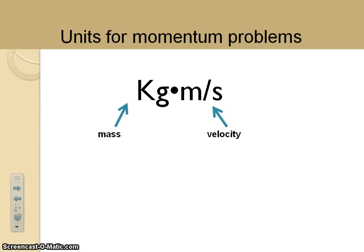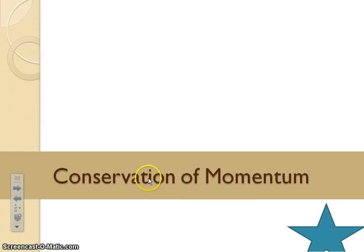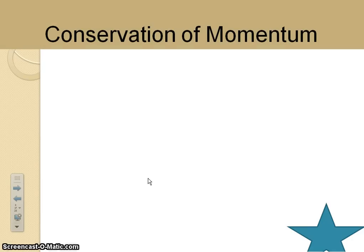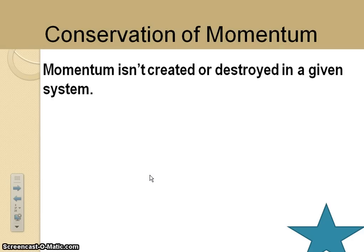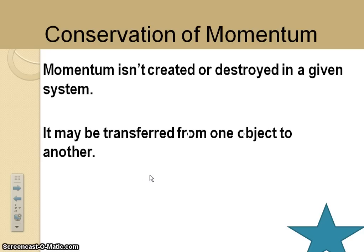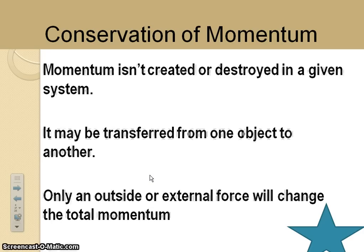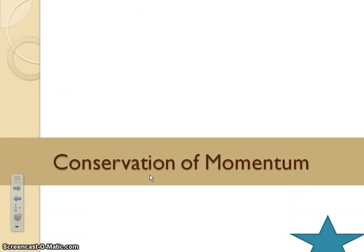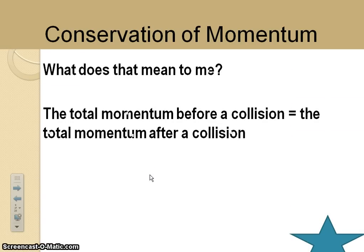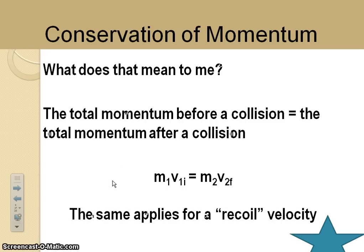Here we have the units for momentum problems. In every case, we'll have kilograms times meters per second. Conservation of momentum, let's go ahead and get down to the next section. Here you have the definition, means momentum isn't created or destroyed in any given system. In other words, it might be transferred from one object to another, but only if there's an outside or an external force. So what does that actually mean to us? It means in a problem, the momentum before a collision is going to equal the momentum after a collision. You should write this down in the equation box for conservation of momentum. The same thing applies for something called a recoil velocity. If I shoot a gun or an arrow, whatever, the momentum before is going to equal the momentum after.